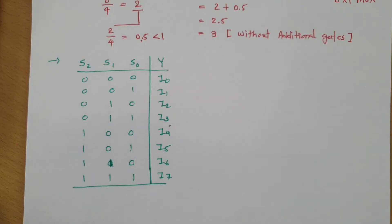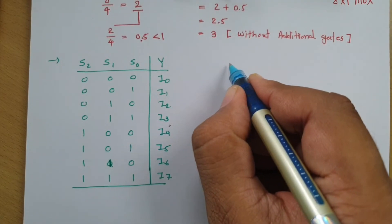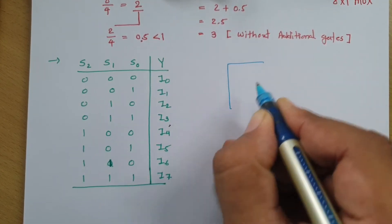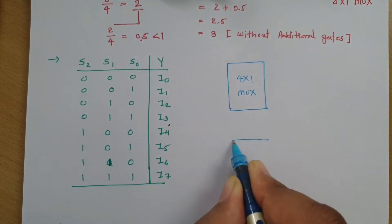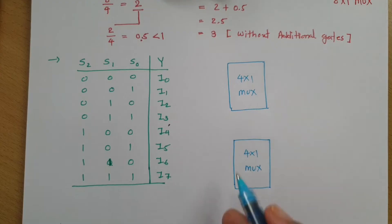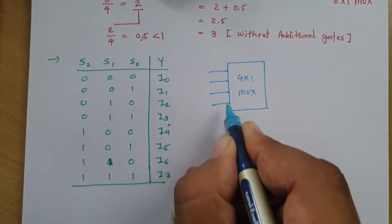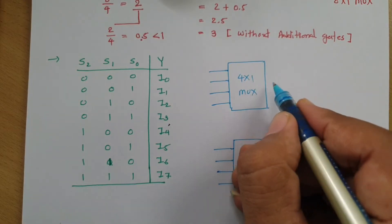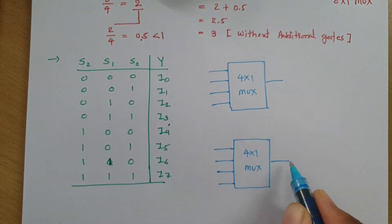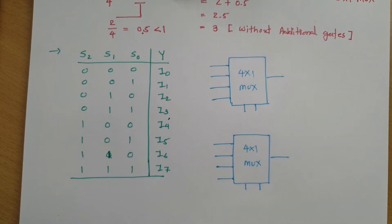Now I'll explain how we can implement an 8x1 mux using 2 4x1 mux. Here I'm using 2 4x1 mux — this is my first 4x1 mux and here is the second 4x1 mux. With each mux we have 4 inputs and 1 output, and both mux have 2 selection lines.